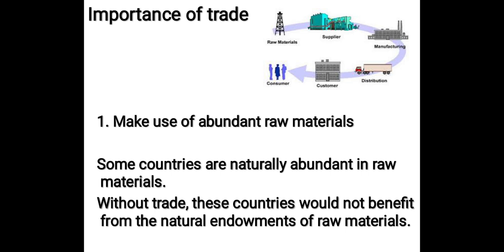The importance of trade: Make use of abundant raw materials. Some countries are naturally abundant in raw materials — example, Oil in Qatar, Metals and Fish in Iceland and Congo, Diamonds and Butter in New Zealand. Without trade, these countries would not benefit from the natural endowments of raw materials. A theoretical model for this was developed by L.E. Heckscher and Bertil O'Hillen, known as the Heckscher-O'Hillen model. It states countries will specialize in producing and exporting goods which use abundant local factor endowments, and will import those goods where the resources are scarce.